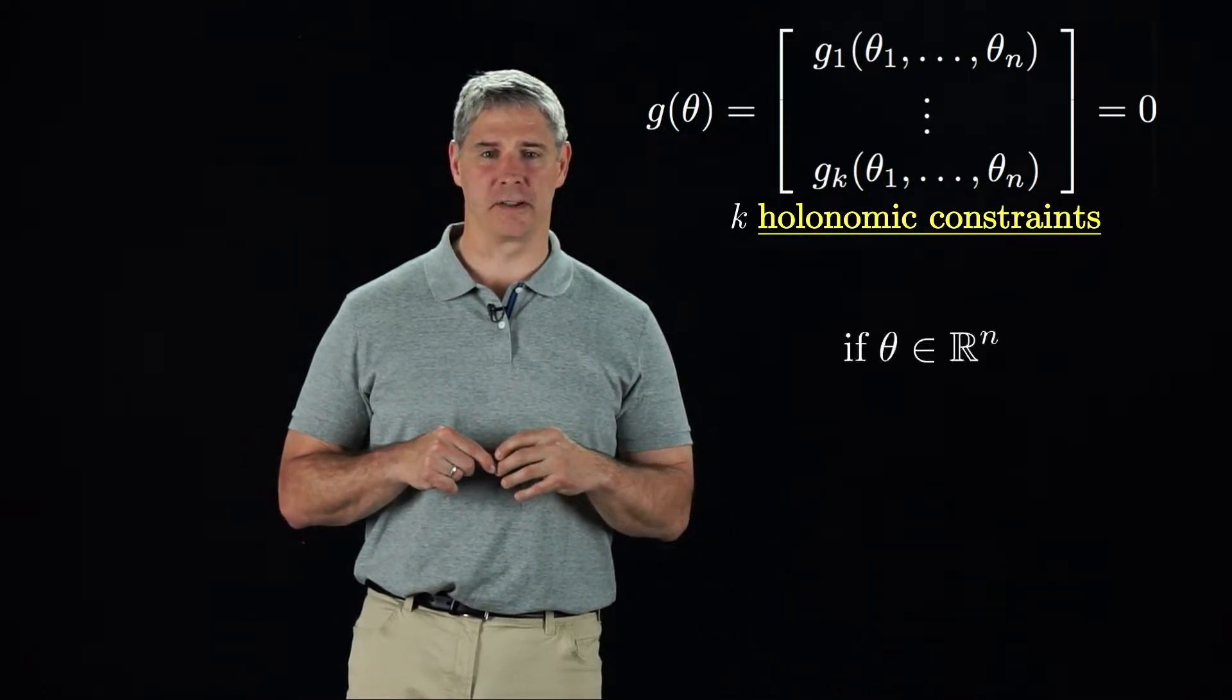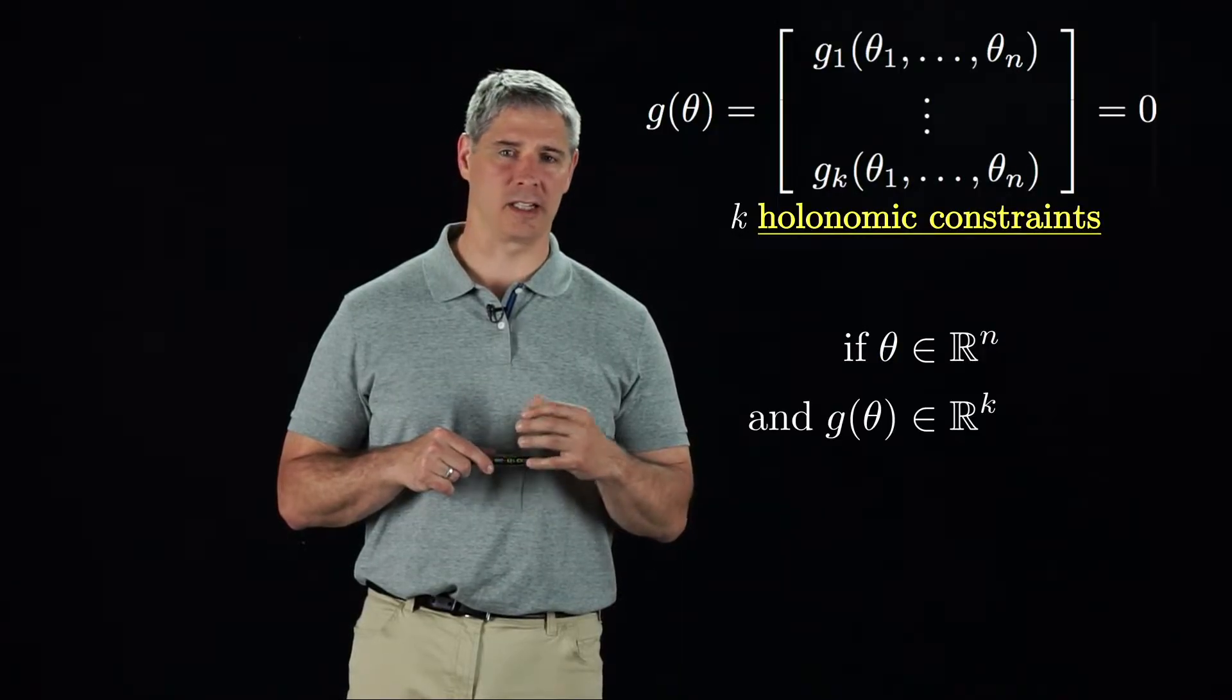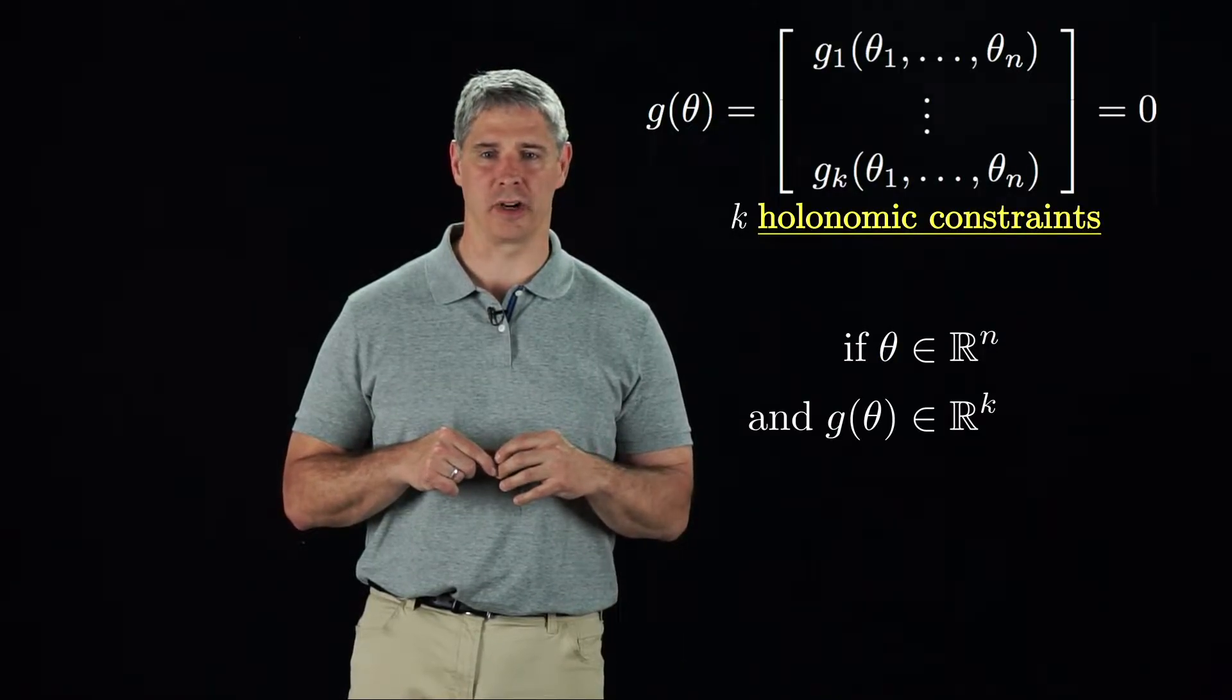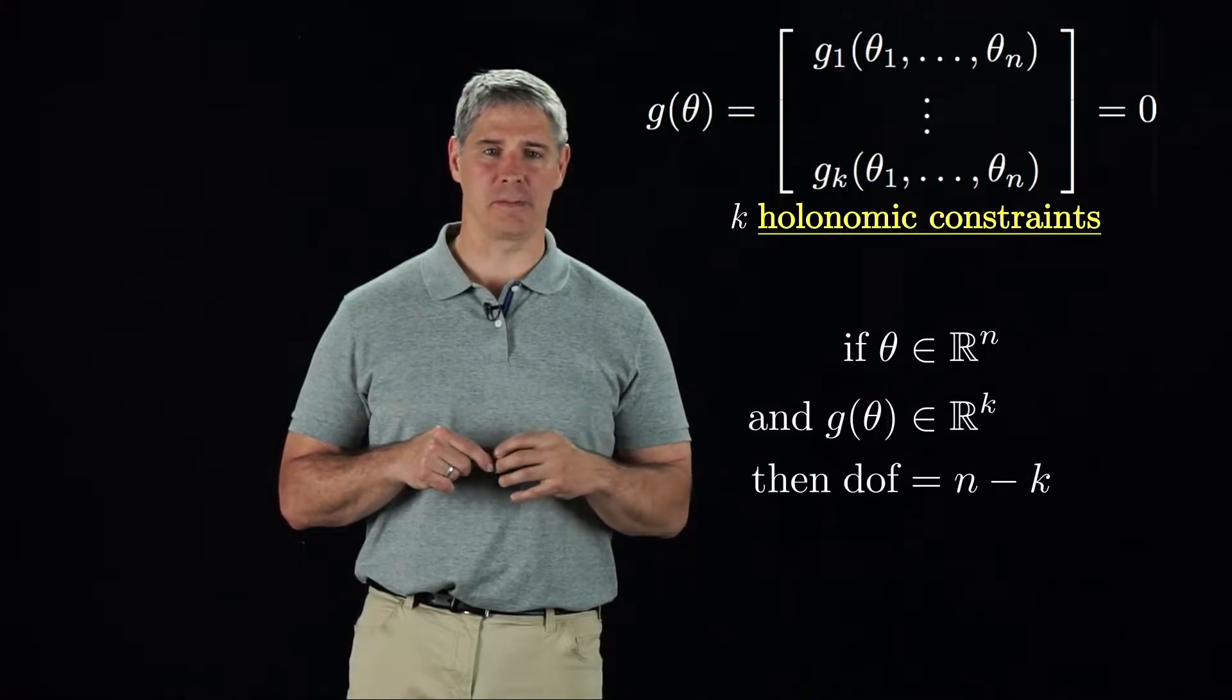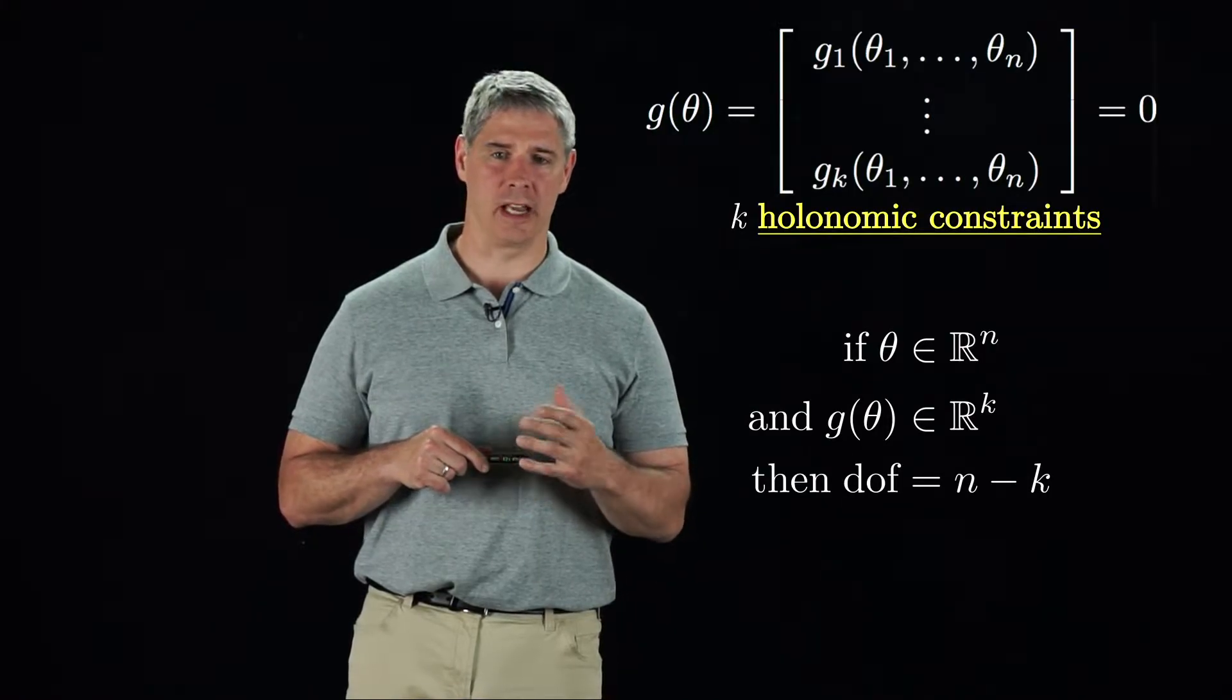If the robot's configuration is defined by n variables subject to k independent holonomic constraints, then the dimension of the C space and the number of degrees of freedom is n minus k.